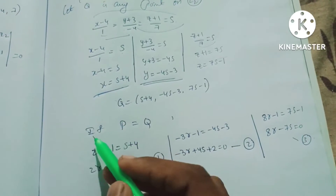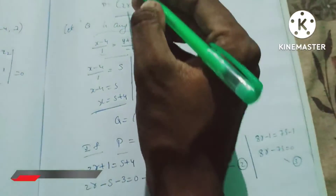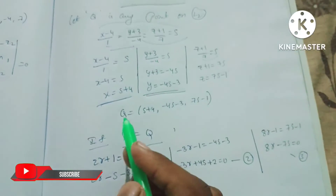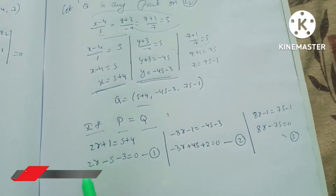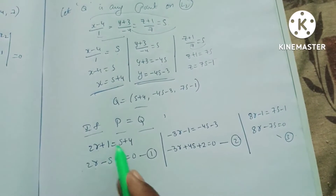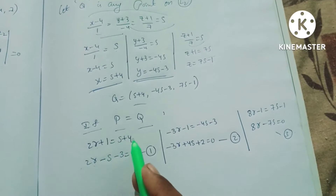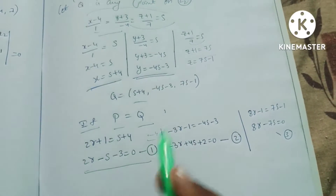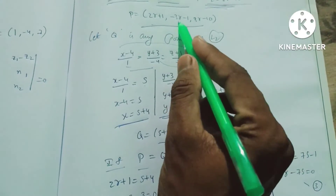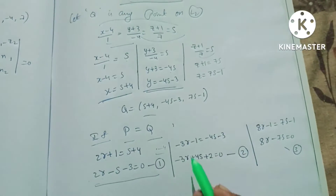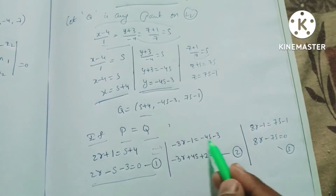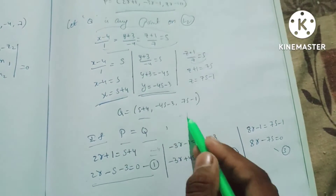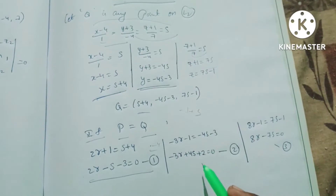For the point of intersection, set P = Q. Equating x-coordinates: 2R+1 = S+4, so 2R − S = 3. Equation 1: 2R − S = 3. Equating y-coordinates: −3R−1 = −4S−3, so −3R + 4S = −2. Equation 2: −3R + 4S = −2.